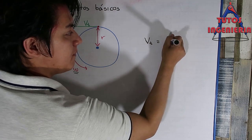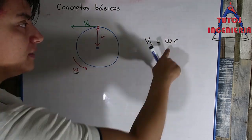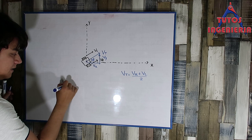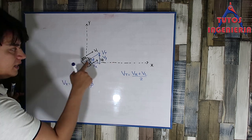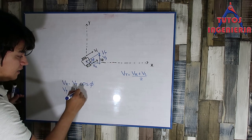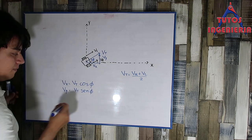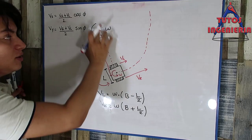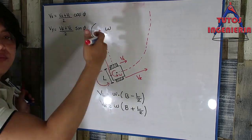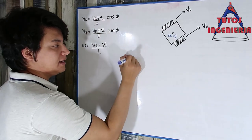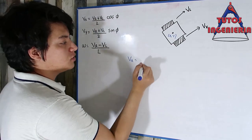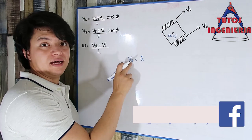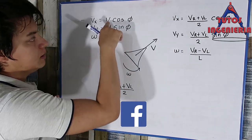Hi everybody. In this video we are going to develop the mathematical model of our car. We are going to find an equation system that describes the relation between our input and output variables. The inputs are the velocities of the wheels and the output is the position of the car. So let's get to it.